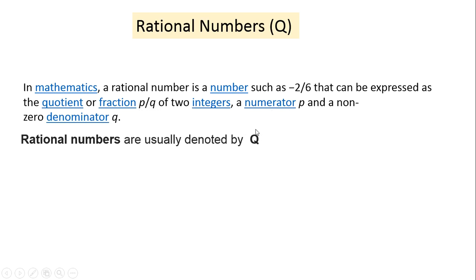capital Q. They are denoted by capital Q. It was thus denoted in 1895 by Giuseppe Peano. He was an Italian mathematician.